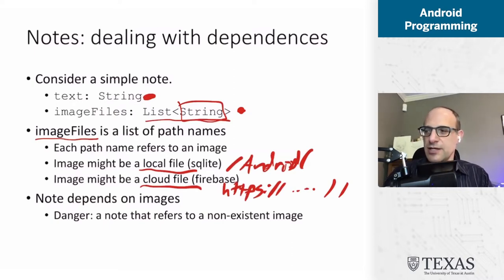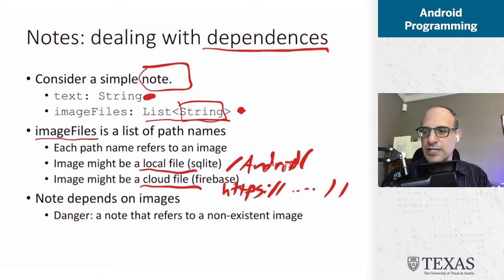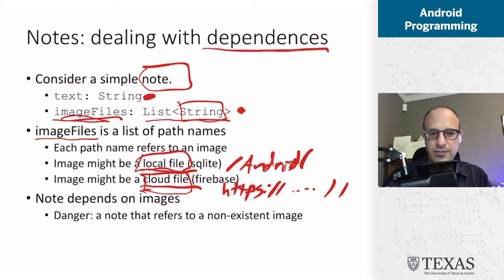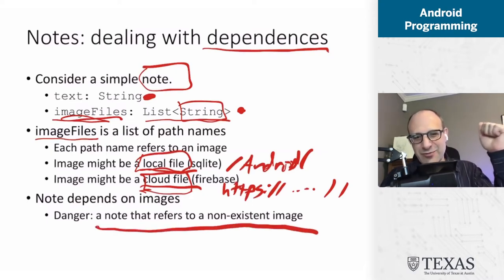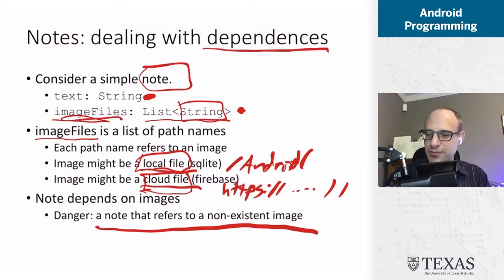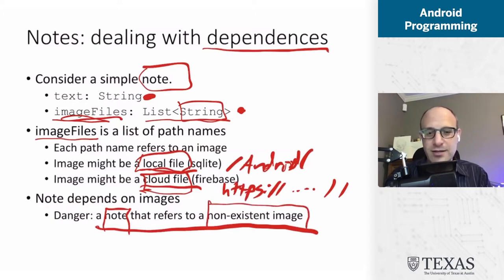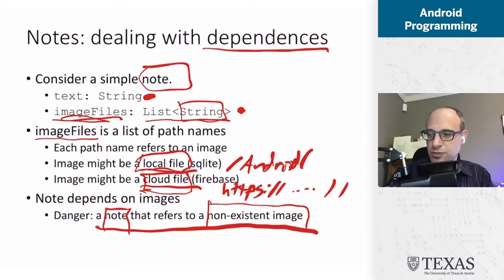In both cases, there's a dependence between the note object — which has this list of files — and the actual file objects, which are either on disk or in the cloud database. So whenever we have a data dependence, where we have an object and a pointer to that object, we need to maintain referential integrity. We do not want a note that refers to a non-existent image, because that is going to make our app look bad — it will get an error or fail to display data the user expects.